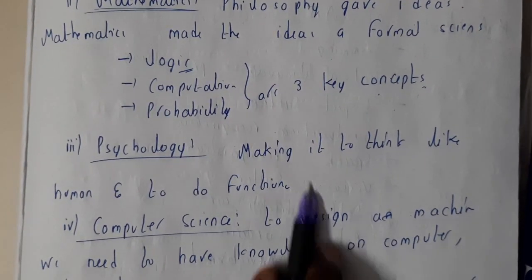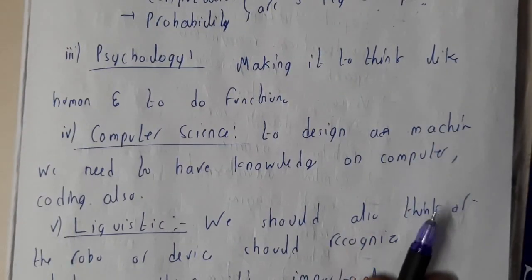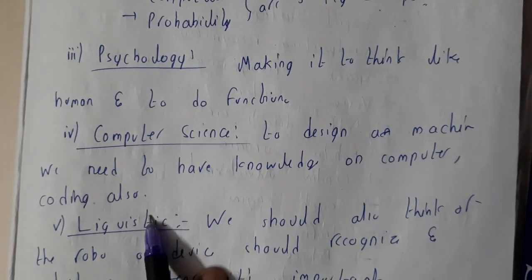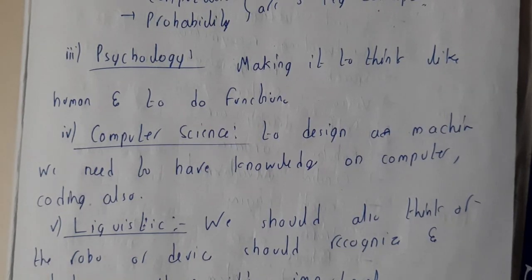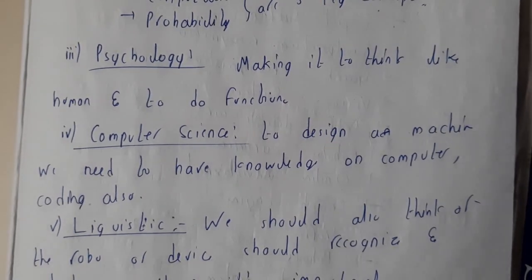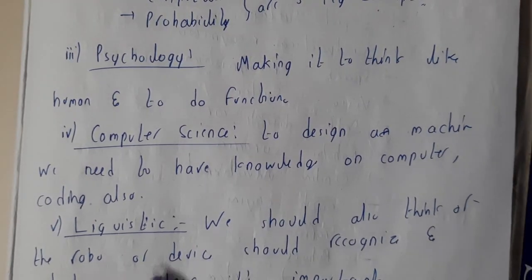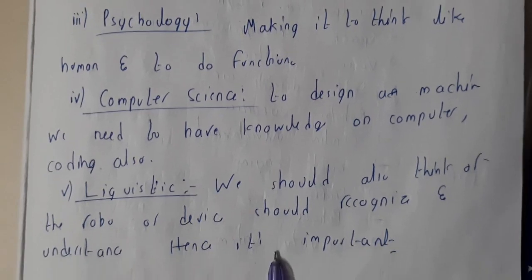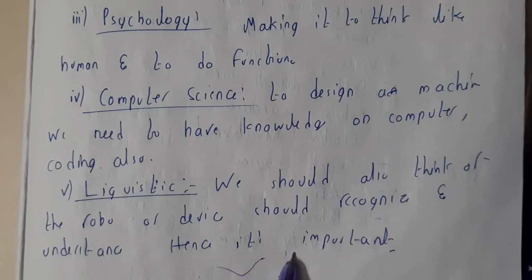Psychologically, AI is about making it think like a human to perform functions. From computer science, to design a machine you need knowledge of coding and languages — designing an AI requires you to know languages, code it, and create it; there is a lot of work involved. Linguistically, the device or robot must recognize and understand how you speak.